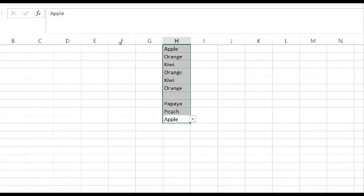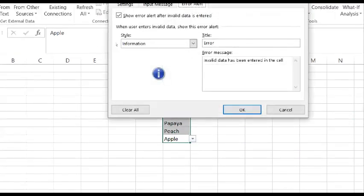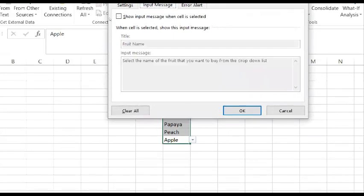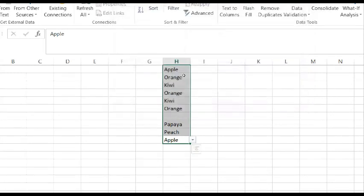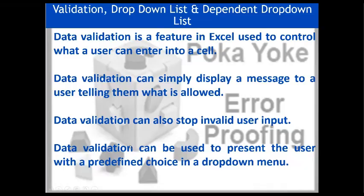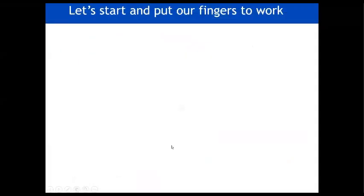So this is how the three tabs of data validation are used: the Settings tab defines validation criteria, the Input Message tab displays a message when a cell is selected, and the Error Alert tab controls what happens when invalid data is entered. Data validation can display a message telling users what is allowed, stop invalid input, and present users with a predefined choice in a drop-down menu.